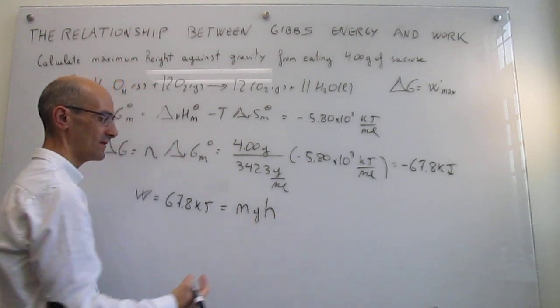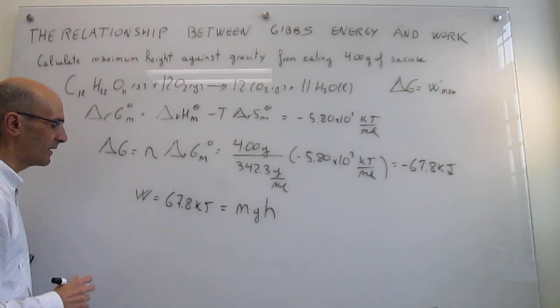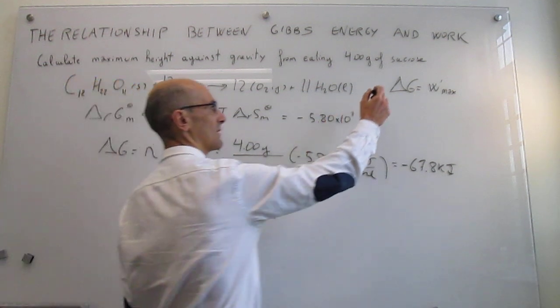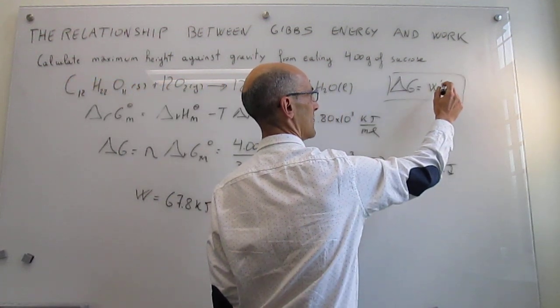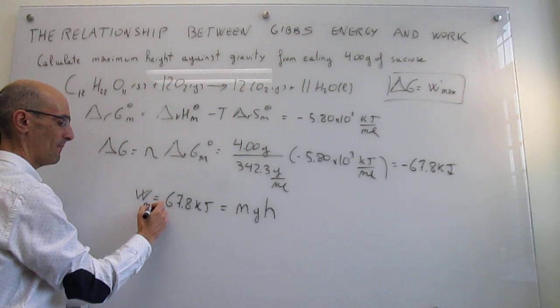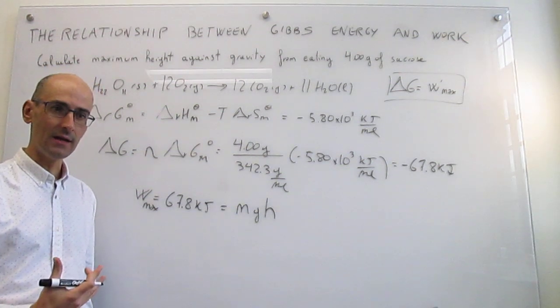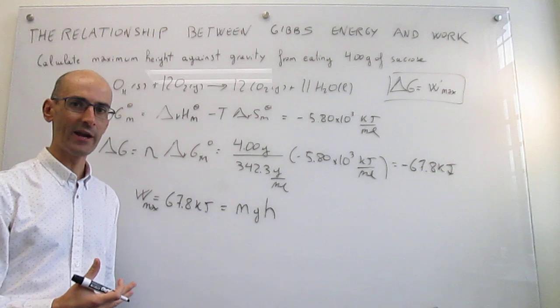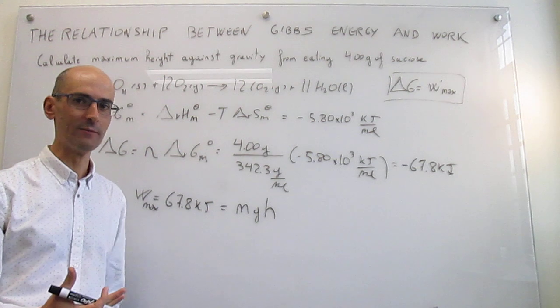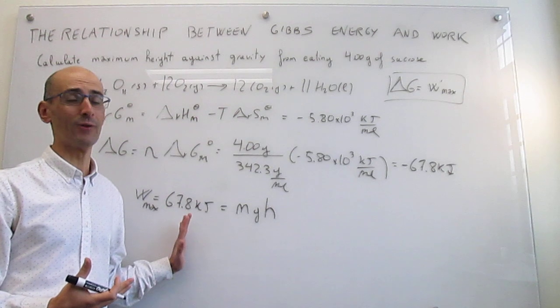Where h is the height that you can get. There's something actually that is quite important here. The relationship between Gibbs energy and work is maximum non-expansion work. So this would be the maximum possible gravitational work you could do. In reality, processes are not 100% efficient. What that means is that more than likely you won't be able to extract all of this work.